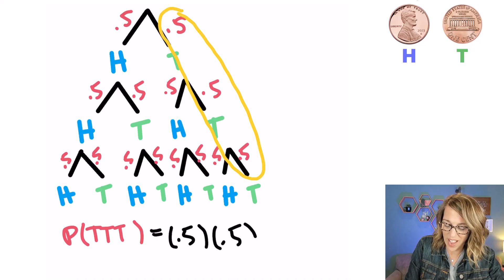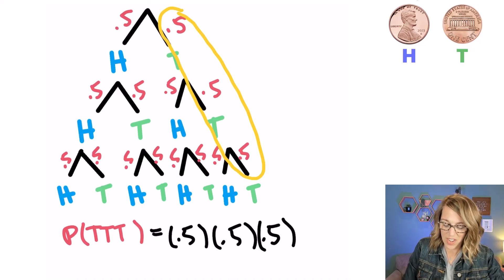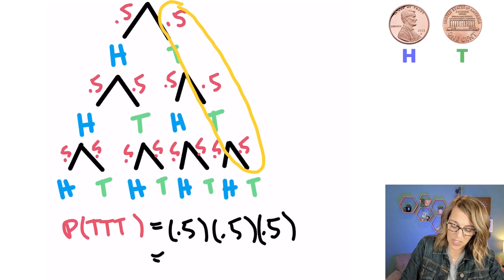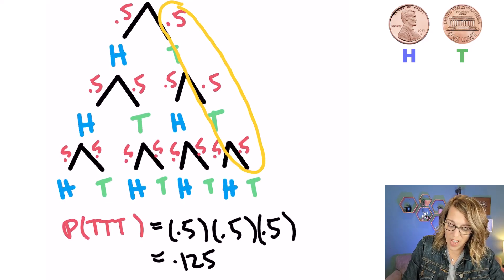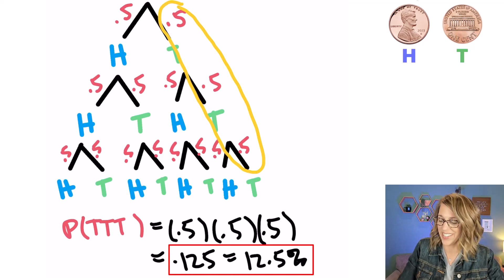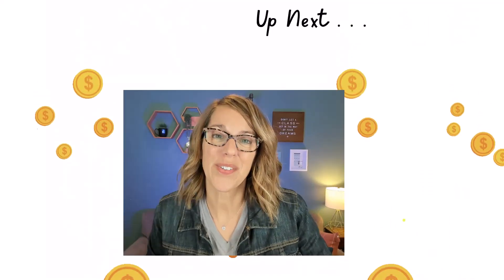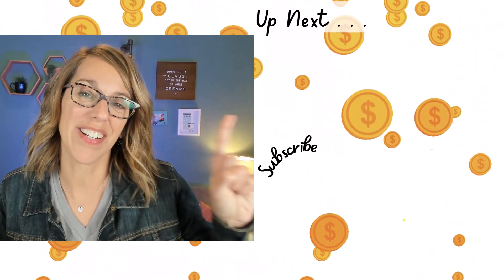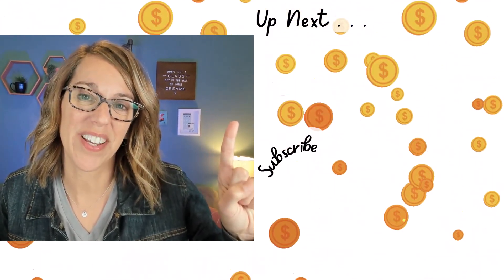So 0.5 times 0.5 times 0.5 is equal to 0.125, or 12.5%. You are doing great — I've got another video for you here.